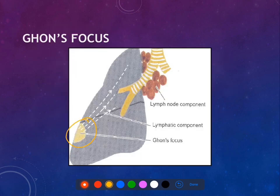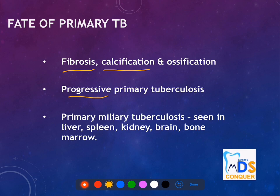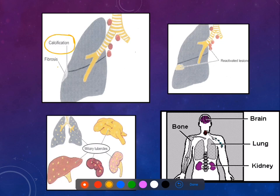The Ghon's focus is associated with primary tuberculosis. The fate of primary tuberculosis may be fibrosis, calcification, or it may change into a progressive form, or it may end up as miliary tuberculosis — meaning multi-organ involvement including the lungs, liver, and other organs.